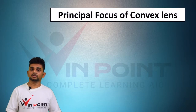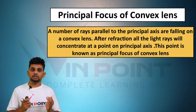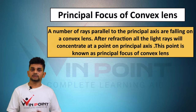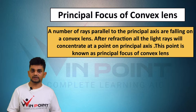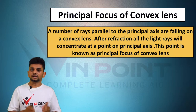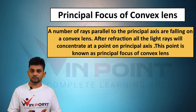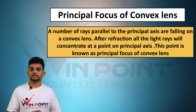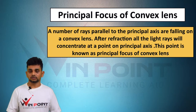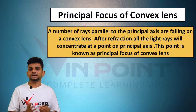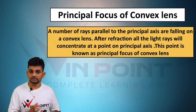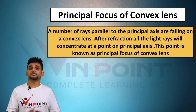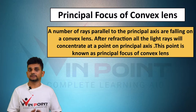Principal focus of a convex lens: a number of rays parallel to the principal axis are falling on a convex lens. After refraction, all the light rays will concentrate at a point on the principal axis. This point is known as the principal focus of the convex lens.